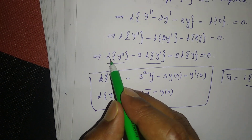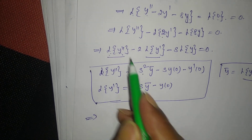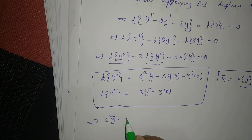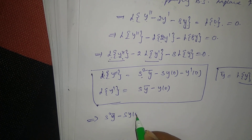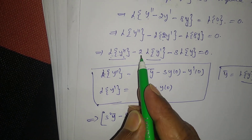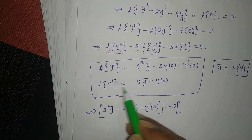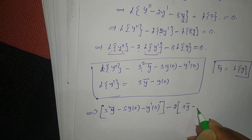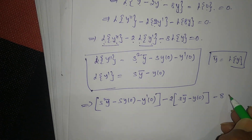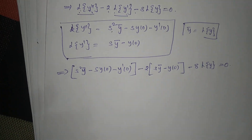Substituting these formulas: [S²·ȳ - S·y(0) - y'(0)] - 2·[S·ȳ - y(0)] - 8·ȳ = 0.